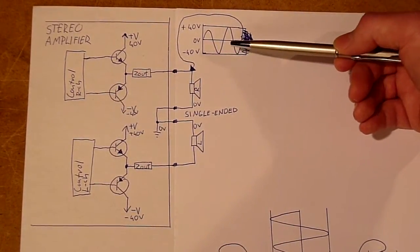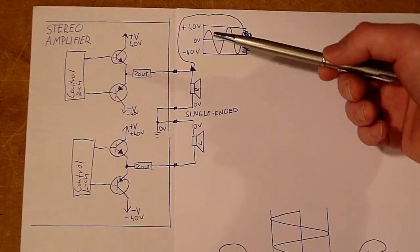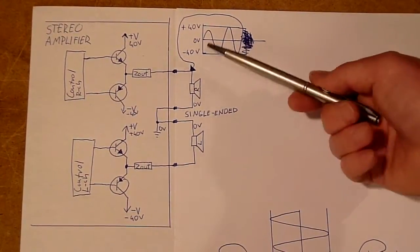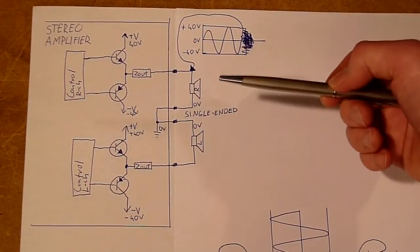And then the amplifier can use its NPN transistor to draw the output low and the speaker moves the other direction because there's a negative voltage applied across it.